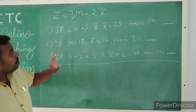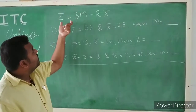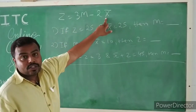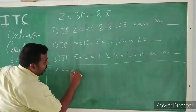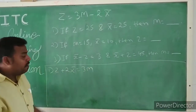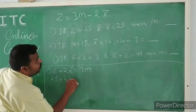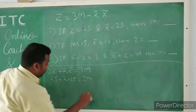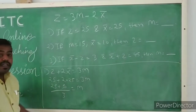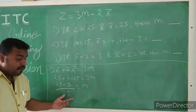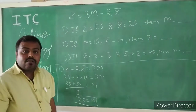The simplest manner to solve this is to first make the term which is to be found the subject. In the equation Z = 3M − 2x̄, taking 2x̄ to the left gives Z + 2x̄ = 3M. Substituting: 25 + 2×25 = 3M, so 25 + 50 = 75 = 3M, giving median M = 25.